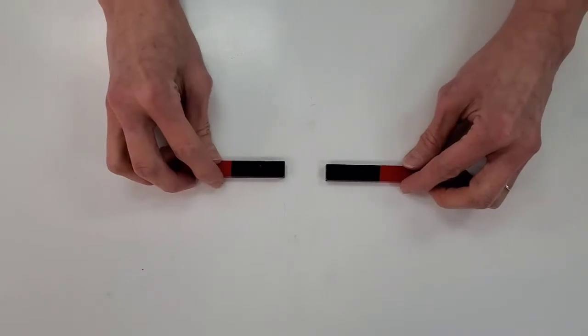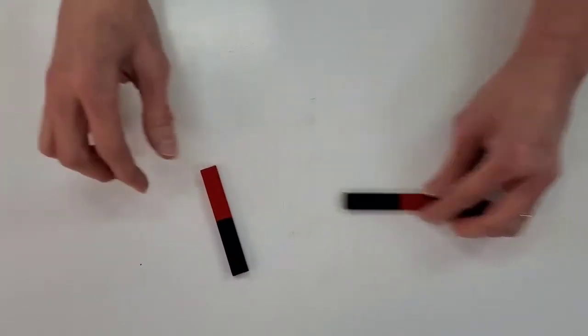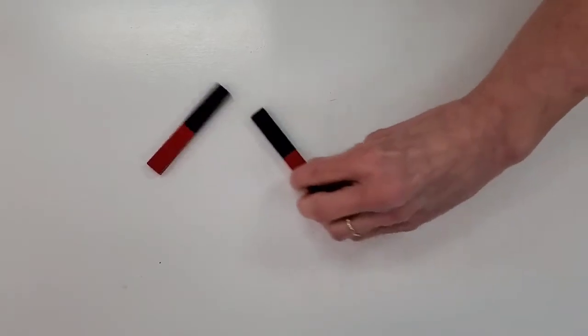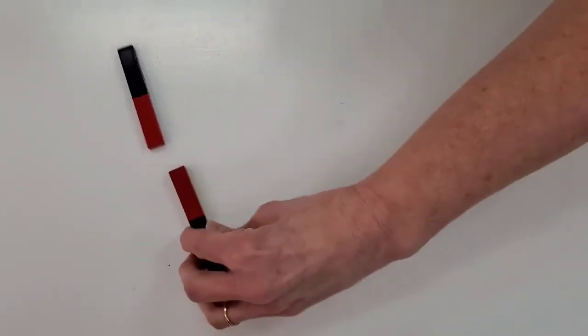What do you notice when the two magnets are placed next to each other? Do they attract or do they repel? Does it depend on the position of the magnet?